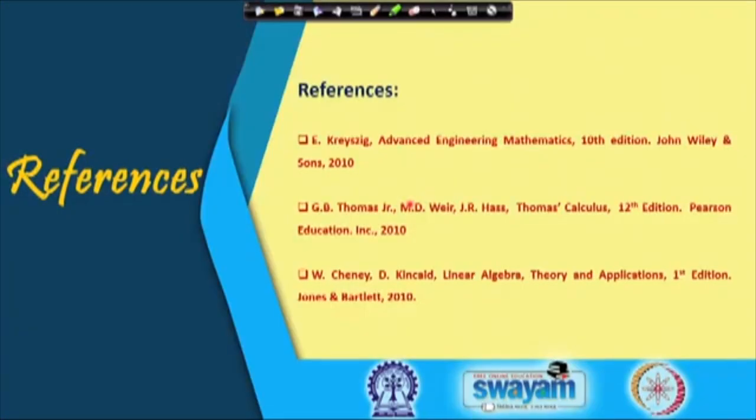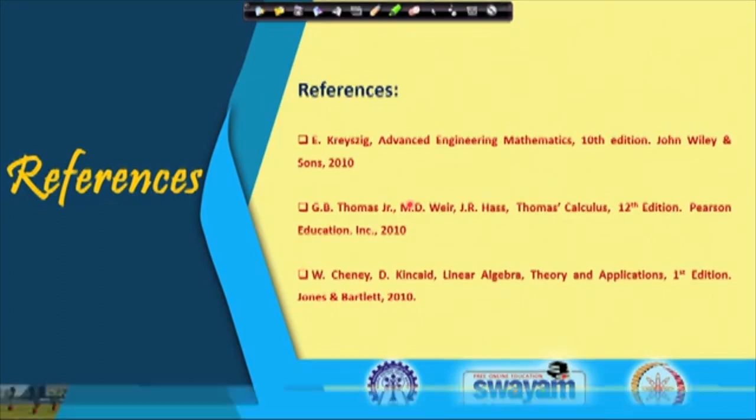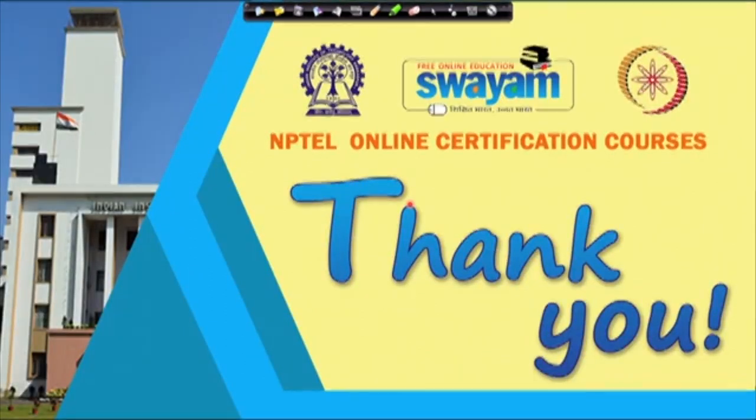In conclusion, we have seen several properties of eigenvalues and eigenvectors for different types of matrices. The core idea throughout was to use the relation A x equal to lambda x and manipulate this equation to prove all these properties. These references were used to prepare these lectures. Thank you for your attention.